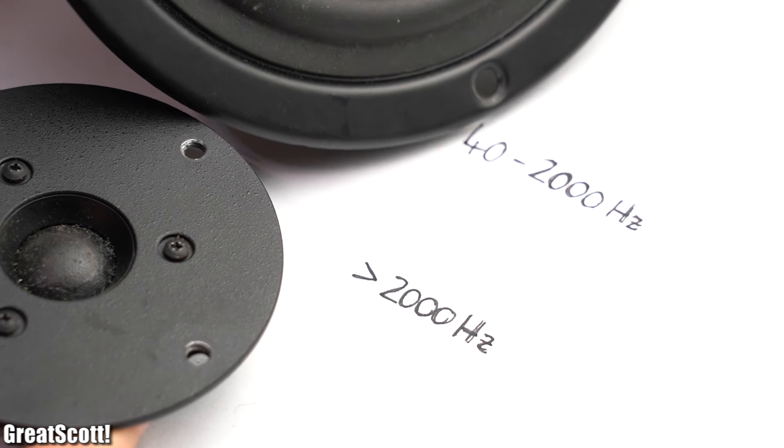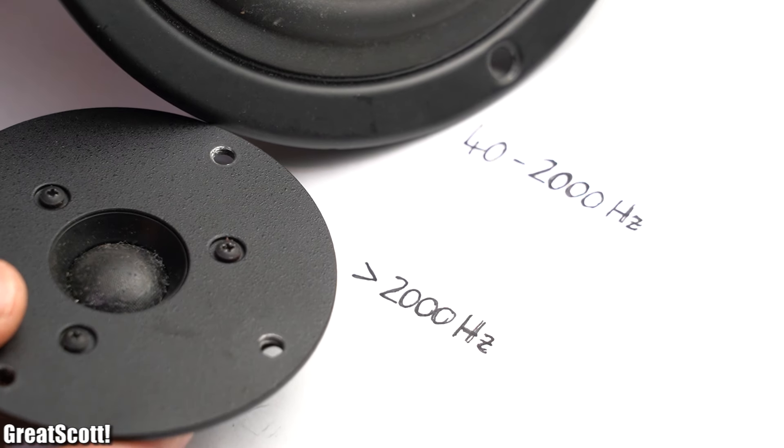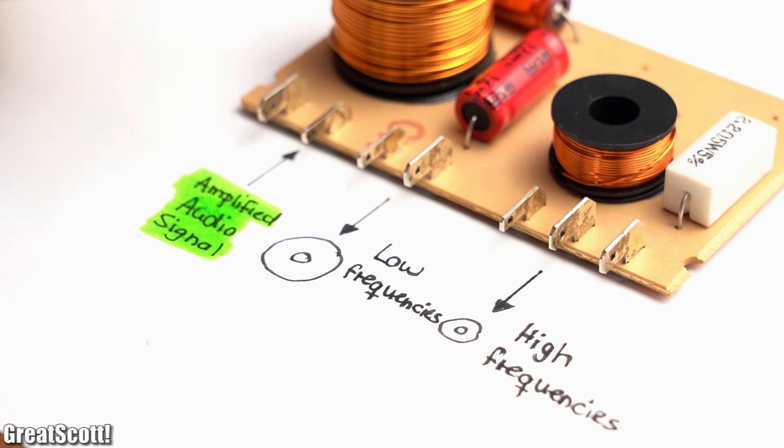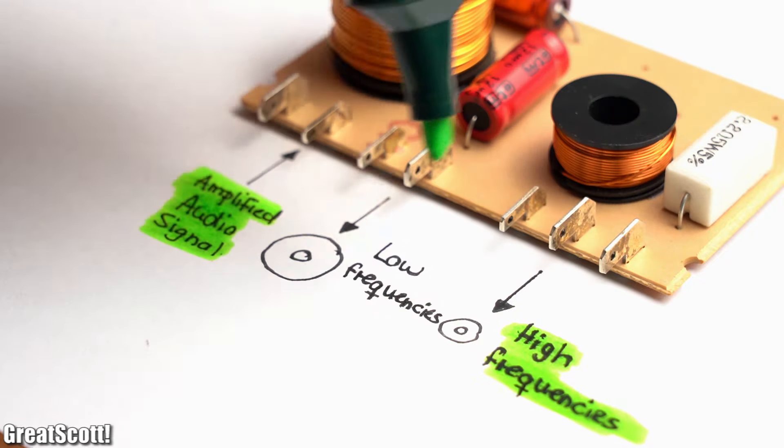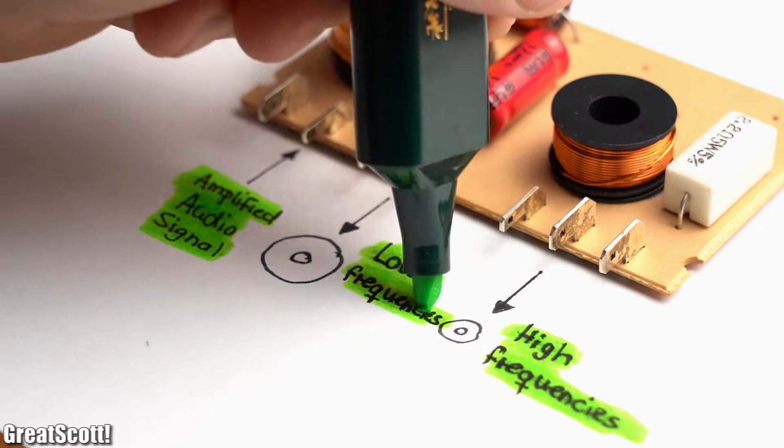So since the two loudspeakers are clearly designed for specific frequency bands, the job of the audio crossover is to separate the frequencies of the amplified audio signal into high and low frequencies.